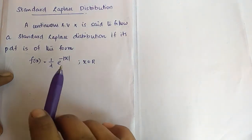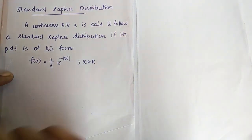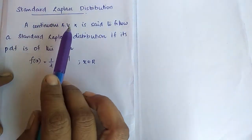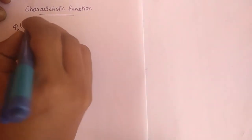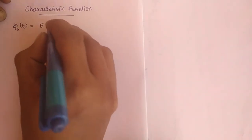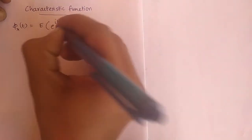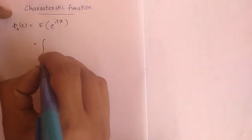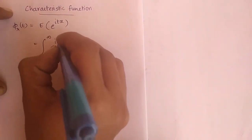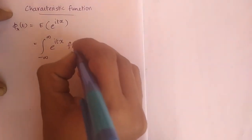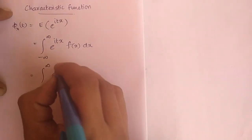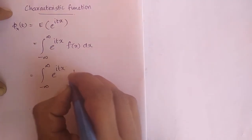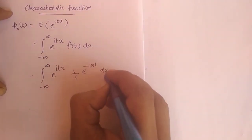Now first of all, we will derive the characteristic function of standard Laplace distribution. By the definition of characteristic function, φ_X(t) = E[e^(itx)], which equals the integral from minus infinity to infinity of e^(itx) times f(x) dx, which equals the integral from minus infinity to infinity of e^(itx) times (1/2) e^(−|x|) dx.